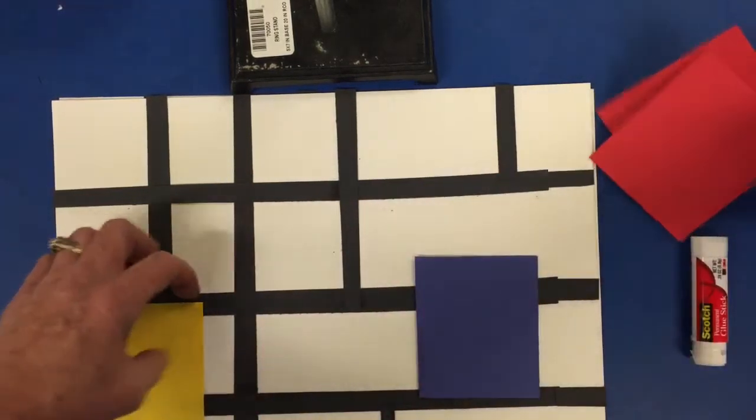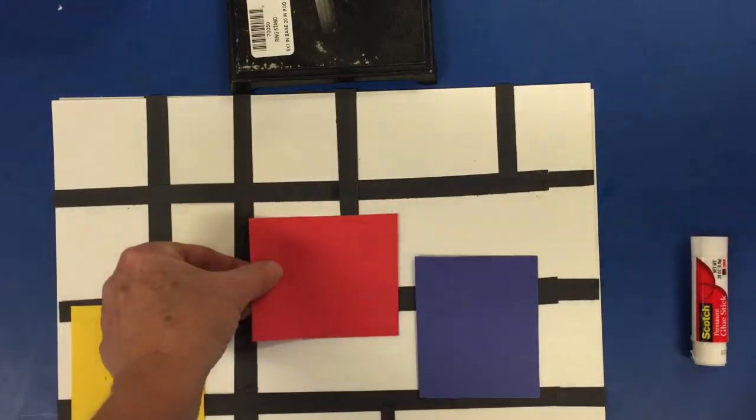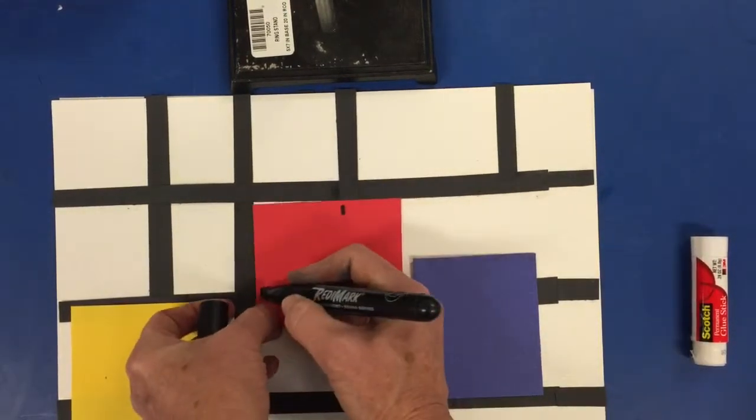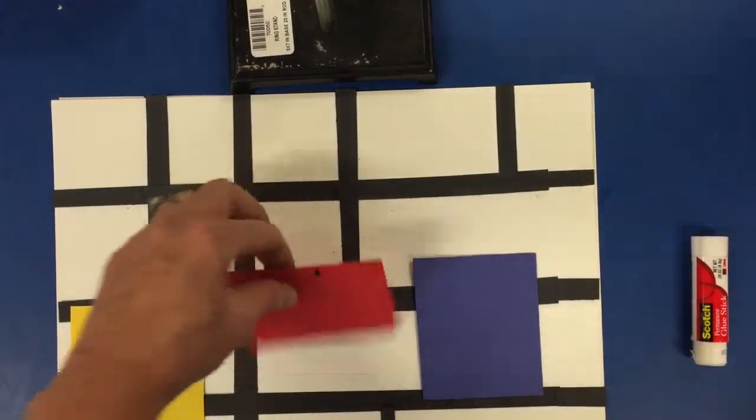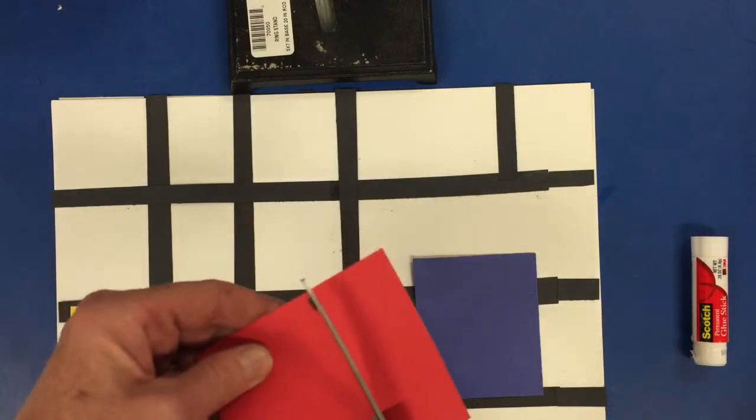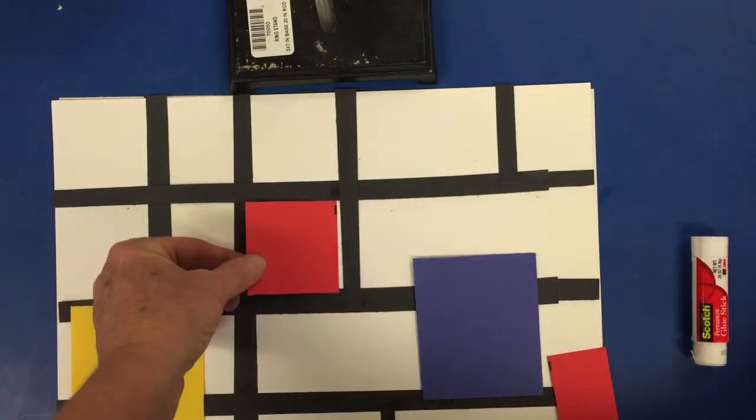So what I'm going to do is I'm going to measure how big my shape, my rectangle or square needs to be. I'm going to cut each shape and fill in my pattern to create a sense of rhythm.